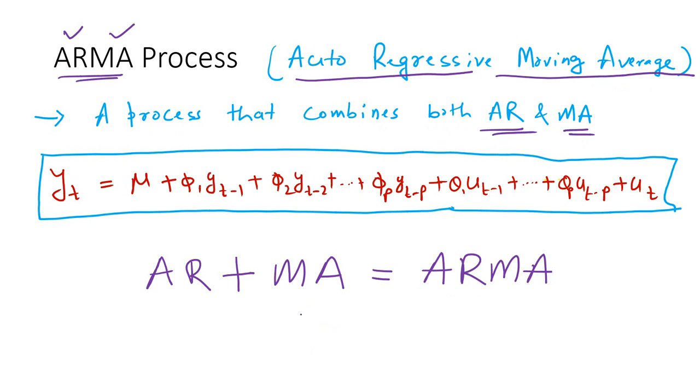How do we represent it mathematically? We represent it like this: Yt, which is the time series for current time period, is a combination of an intercept and then it has got several AR terms, lags of Yt: Yt minus 1, Yt minus 2 and so on till Yt minus P.